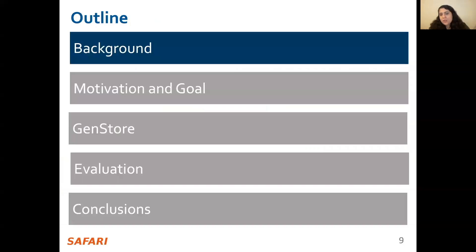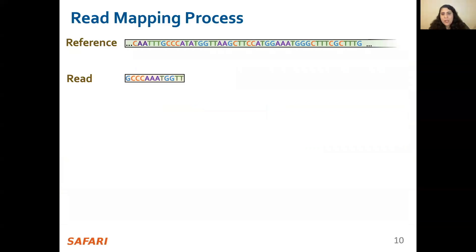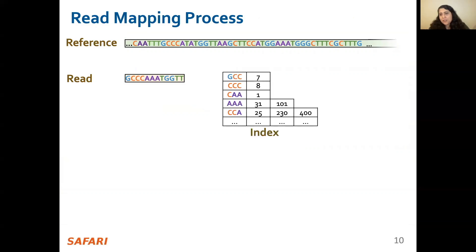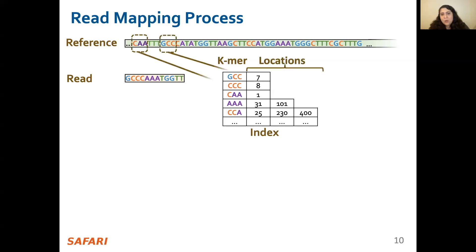That was a summary of my talk, so let's start with the background on readmapping. Mapping reads to a reference genome requires expensive computation on large datasets. The search space in the reference genome can be very large — for example, the human reference genome contains more than 3 billion characters. Therefore, readmappers typically use an index of the reference genome to reduce the search space. This index contains unique K-mer subsequences extracted from the reference genome and the locations of these K-mers in the reference genome.